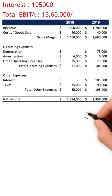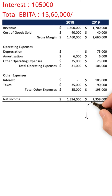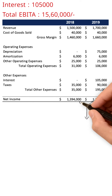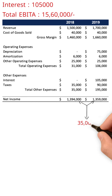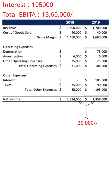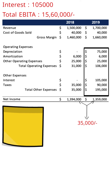The above calculation shows that even though the company's net income decreased by 35,000, the earnings before interest, tax, depreciation, and amortization for the company actually increased by 1,25,000 in 2019.